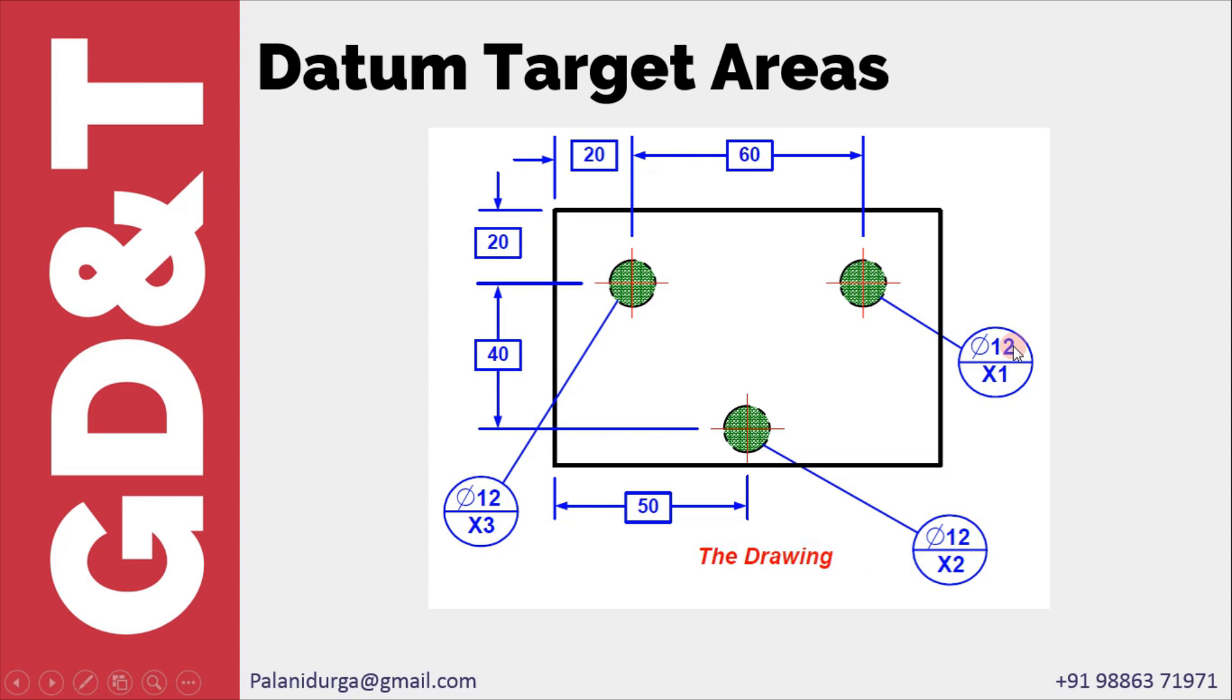But depending upon the availability we can have different sizes and different shapes also. If it is a square, we put a square symbol in the datum identification symbol. If it is a rectangle, we can directly give the dimensions with basic dimensions here itself, as we cannot give the width and breadth exactly in the identification symbol.